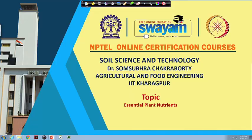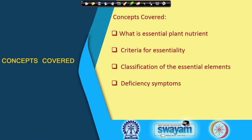Welcome friends to this week 7 lecture series of Soil Science and Technology. In this coming 5 lectures, we will discuss about the different types of essential plant nutrients and their functions. The first topic we will cover is essential plant nutrients, including the criteria for essentiality, how we classify different essential elements, and finally some deficiency symptoms of different essential nutrients.